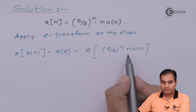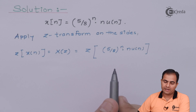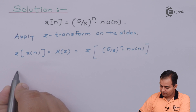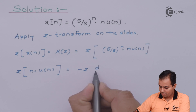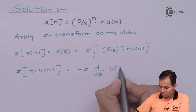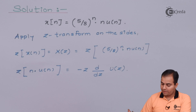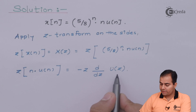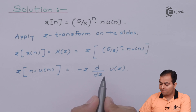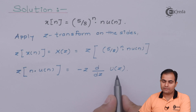As mentioned, we will first use the differentiation property. The statement is: the Z-transform of n * u(n) is minus Z times d/dz of U(z), which means a first-order differentiation of U(z). Here the order of n is 1, so we differentiate U(z) once. If the order were 2, we would differentiate twice.